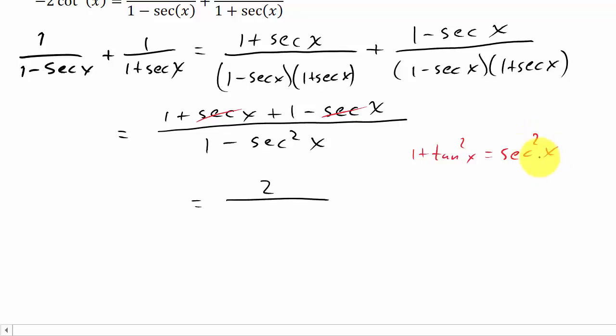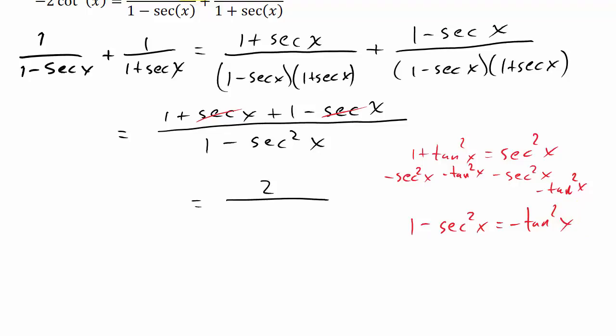And if I subtract secant squared x to both sides, that'll give me my one minus secant squared, then I'll also need to subtract tangent squared to both sides. So that leaves me with one minus secant squared x equals negative tangent squared x. And so the one minus secant squared I can replace with negative tangent squared.